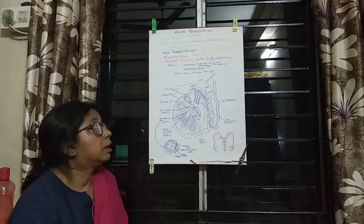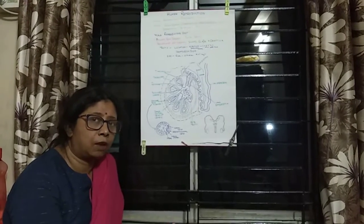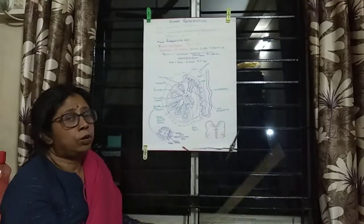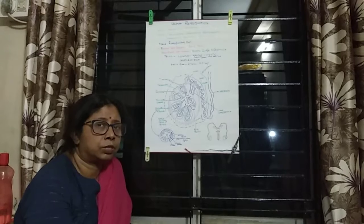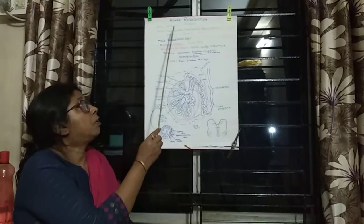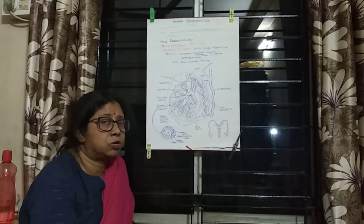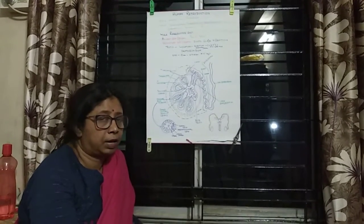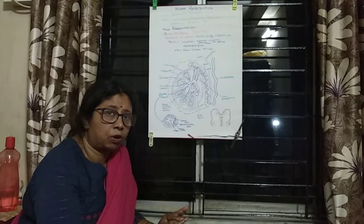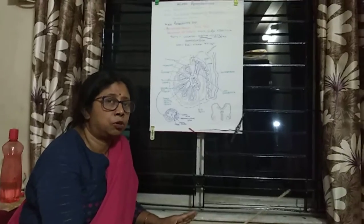Today we are going to start a very important chapter of the Class 12 syllabus: human reproduction. We have a general idea of human reproduction, but here we will have a detailed study. First of all, it is sexual reproduction. It is biparental, meaning two parents are needed to produce male and female gametes. It is oogamy, where the female gamete is larger and non-motile, and the male gamete is smaller and motile.